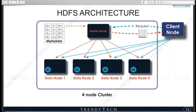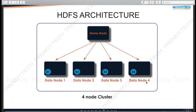To summarize the read cycle: the client makes a request, it goes to the NameNode, the NameNode checks its metadata table and responds with the locations, and then the client reads the data from those DataNodes. This is all background process. A cluster consists of one NameNode and multiple DataNodes — in this case, a four-node cluster.